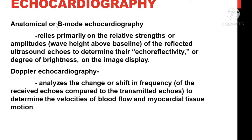The B-mode relies primarily on the relative strengths or amplitudes — that is, the wavelengths of the reflected ultrasound echo — which determines the echogenicity or the degree of brightness, and it tells us the anatomic structure.